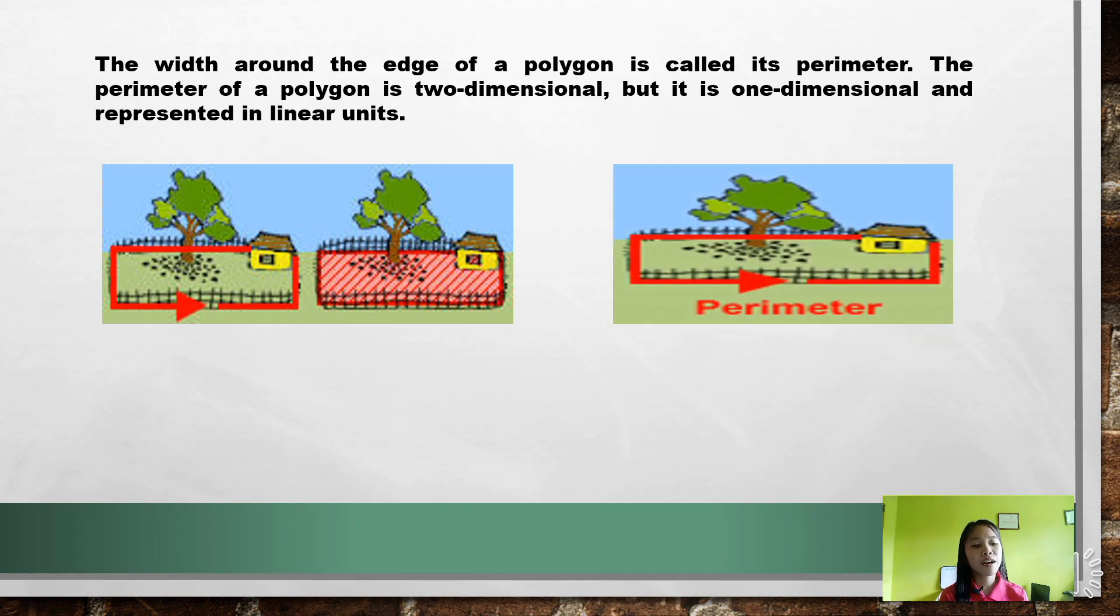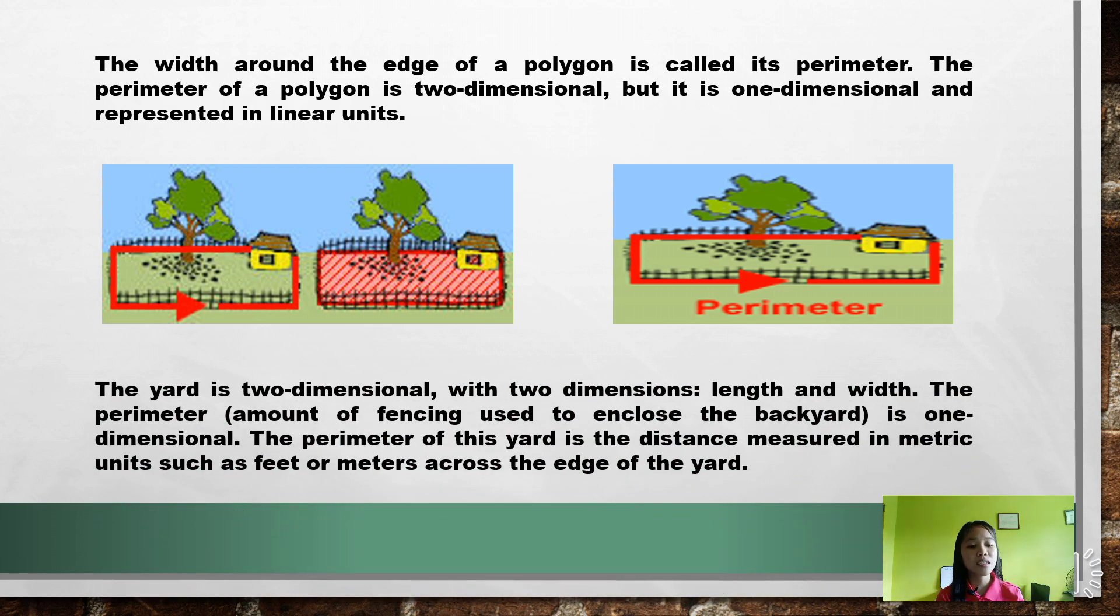Take a look at our illustration of a rectangular backyard to help us make this distinction. The yard is two-dimensional with two dimensions: length and width. The perimeter, amount of fencing used to enclose the backyard, is one-dimensional. The perimeter of this yard is the distance measured in metric units, such as feet or meters, across the edge of the yard, as shown by the red arrows.